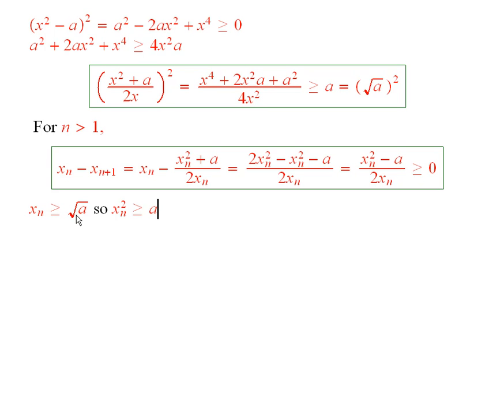Furthermore, this sequence is bounded below by the square root of a. Now by completeness, we know that this implies that this sequence, x sub n, converges to some x.